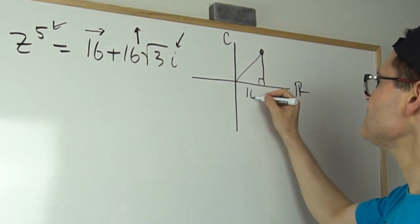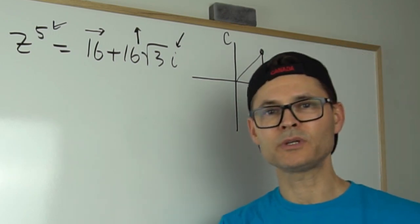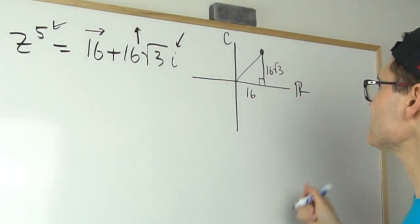So this is 16 and this is 16√3. And that looks really familiar. I know a lot of you, that looks like a special triangle, right?